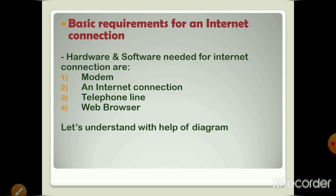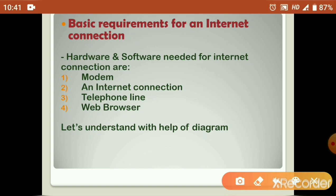Students, you know, to use internet, we have to connect our computer with the internet. So, for internet connection, you need four hardware and software items. These are given on the screen. First is modem, second is an internet connection, third one is telephone line, and fourth one is web browser. In this, modem and telephone line are hardware devices, but an internet connection and a web browser are software applications.